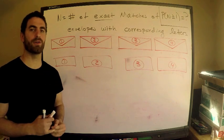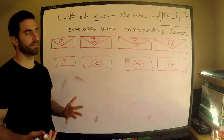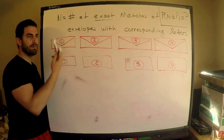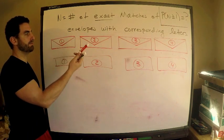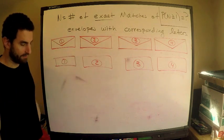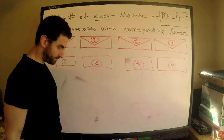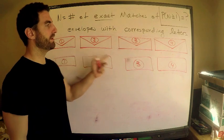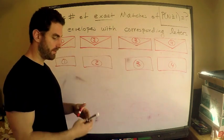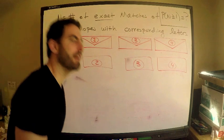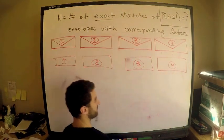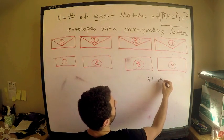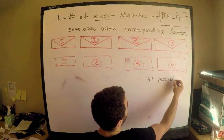First thing: how many possible ways are there to place the letters into envelopes? If I take envelope one — doesn't matter which envelope — there are four choices for the first, then three choices for the next, then two, then one. So the total possible outcomes are 4! = 24.